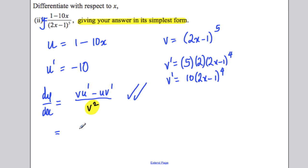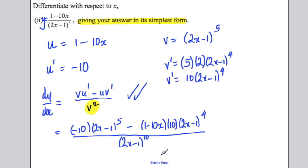vu': this times this. So negative 10 times (2x - 1) to the power of 5. Keep everything in brackets. Subtract uv': this times this. So (1 - 10x) times 10(2x - 1) to the 4. All divided by (2x - 1) to the 5 squared, which would be to the 10.